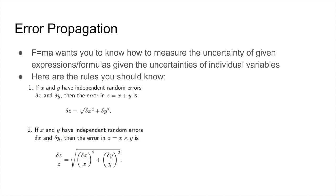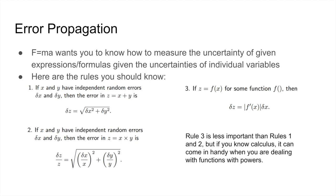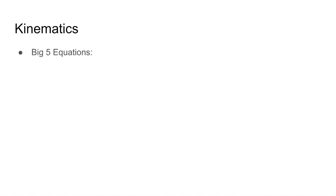The multiplication rule: if z = x times y, then the uncertainty of z over z — which is basically the percent uncertainty — is equal to the square root of the percent uncertainty of x and the percent uncertainty of y. The power rule: if z is equal to some function, then the uncertainty of z is given by f prime of x — the derivative of f with respect to x — times the uncertainty of x. This follows from calculus. Rule three is less important than rules one or two, but it may come in handy when dealing with a bunch of powers.